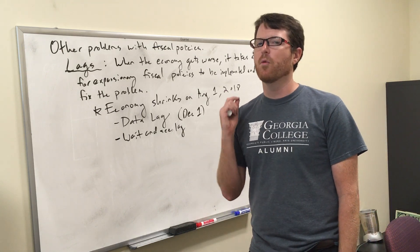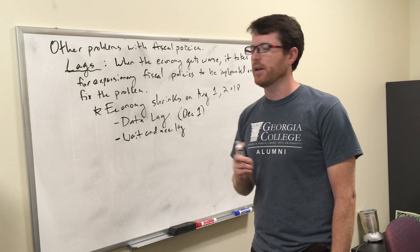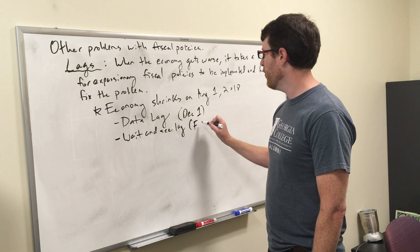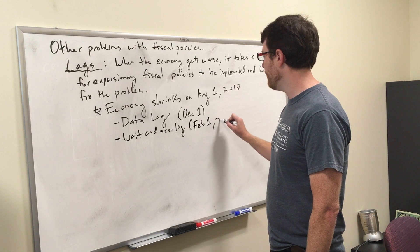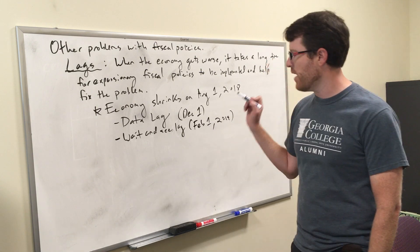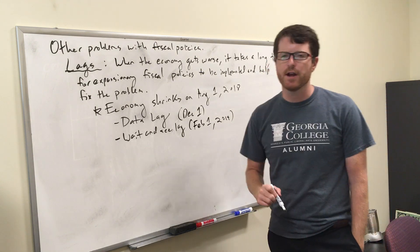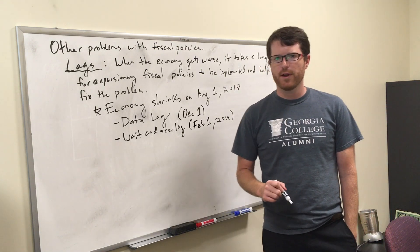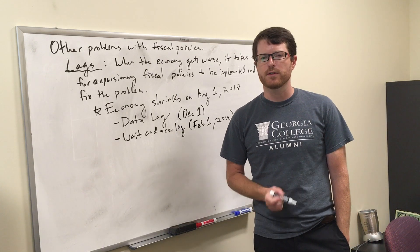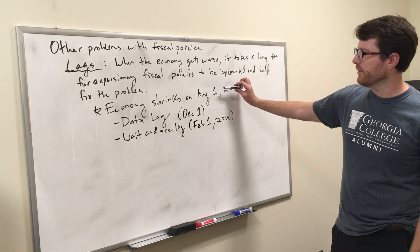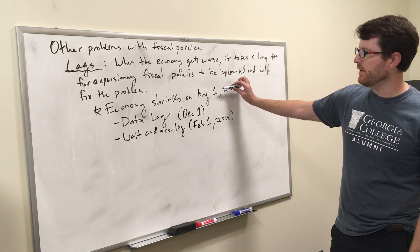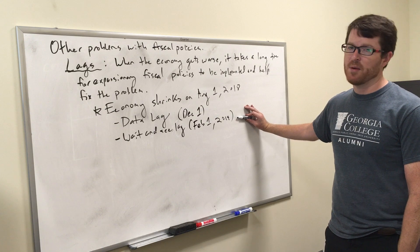Keynes recommended counter-cyclical government fiscal policies — and a balanced budget is the opposite of that. Counter-cyclical policies mean when real GDP declines and real incomes decrease, the government should increase its spending. Here, we're doing the opposite. So anytime the economy gets worse, this balanced budget policy is going to make it get even worse.